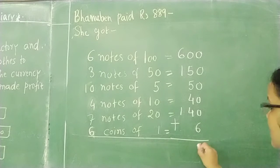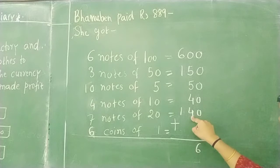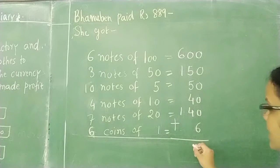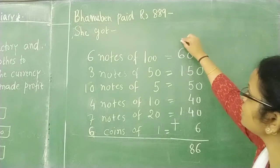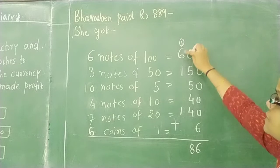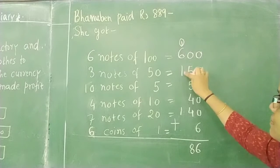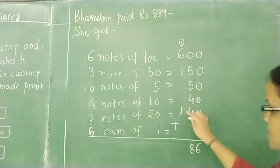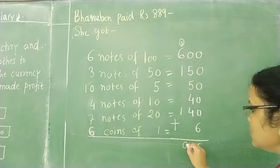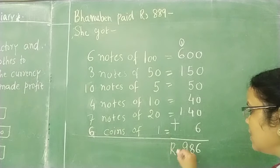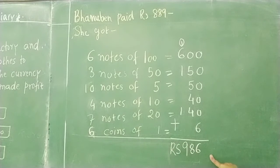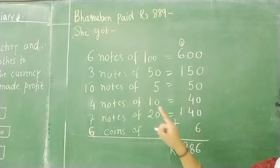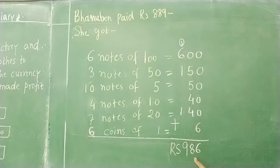Let's add it: 6, 4, 5, 10, 49, 80, 8 — 1 carry over on the head of the 6. 6 plus 1 is 7, plus 8 and plus 9. So, 986 rupees — that is what the shopkeeper has given to Banu Ben.